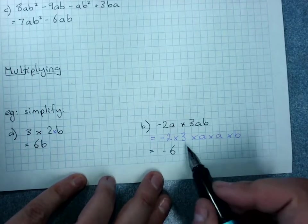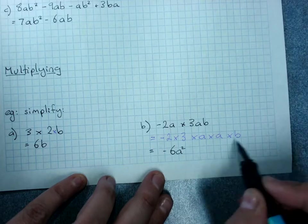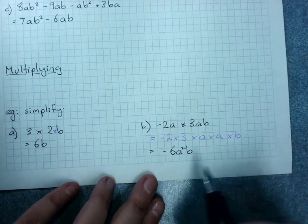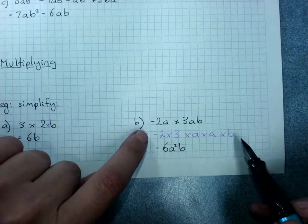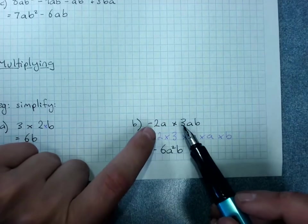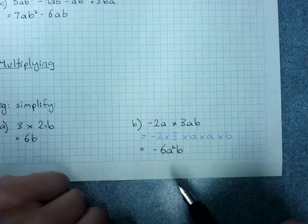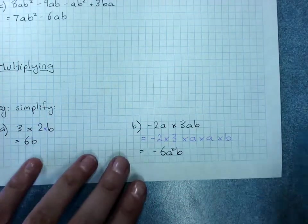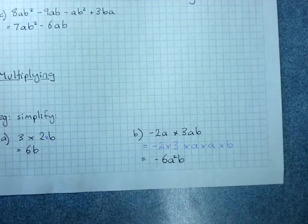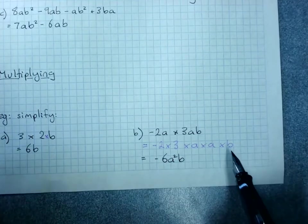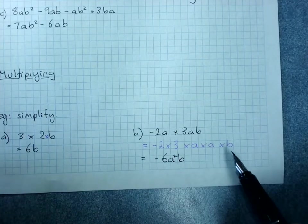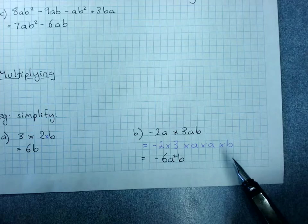a times a, use your index laws, it's a squared times b. That's all we need to do. You don't need to show this line of working because you know that you multiply the coefficients and you use the index laws to gather your powers. You can always do this line of working if you're not sure because this working supports you to get the right answer.